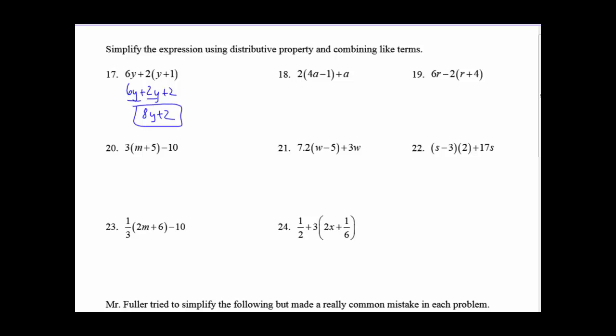Okay, number 23, starting with a fraction on the outside, let's distribute the fraction through to both the 2M and the 6, not to the negative 10, the negative 10 is separate. So we're going to get 2/3 M, take a 3 of 6, and we get plus 2, and then we still have that minus 10, so we end up getting 2/3 M minus 8.